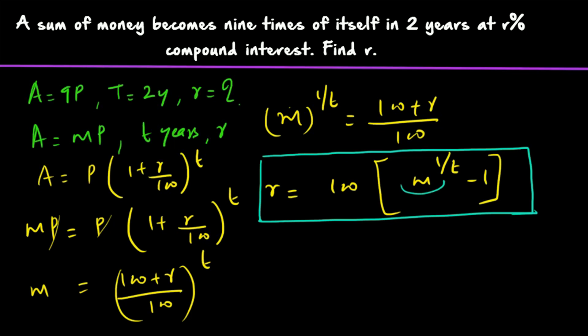So the rate of interest R = 100 × (M^(1/T) − 1). What is M? Amount is becoming M times the principal in T years. T is the time period and R is the rate of interest. Once you know this shortcut, you can easily solve these kinds of problems. Now we can apply this formula to our question.